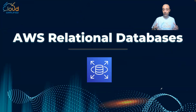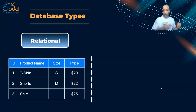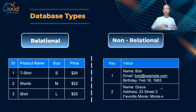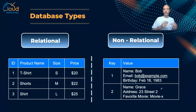We'll start with the first type of databases, which is AWS relational databases. From a high level, databases can be divided into mainly two types: the first type is what we call relational, and the second type is what we call non-relational. In this video we are going to cover relational databases and the multiple offerings.